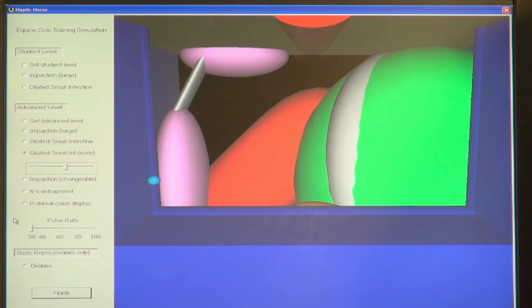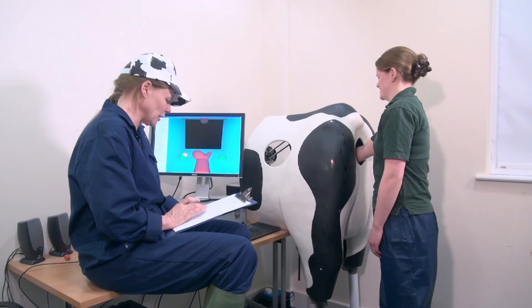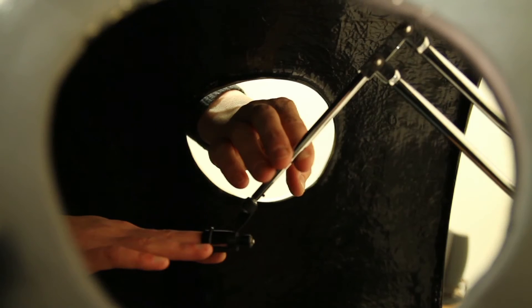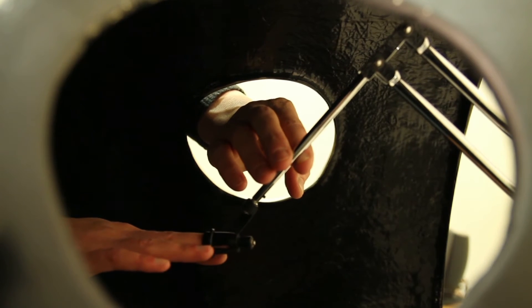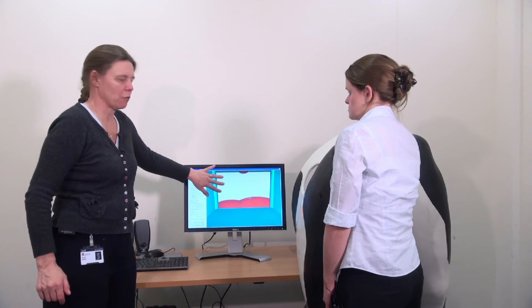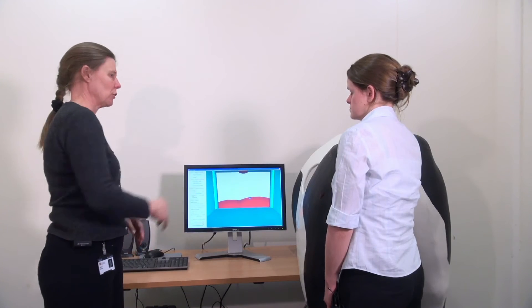In addition, because the animal's organs are visible on the computer monitor, the instructor can see exactly what the student is doing and direct their movements, something that isn't possible with a real animal.